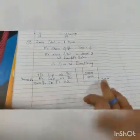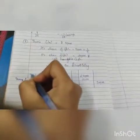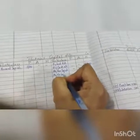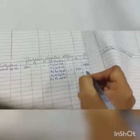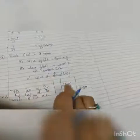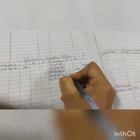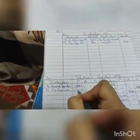Now we post this. H and A are on the 'By' side. Write 'By H Capital Account' and 'By A Capital Account' — H column: 20,000, A column: 10,000. Then 'To P Capital Account' — A column: 10,000, H column: 20,000. This completes the posting of the direct entry.